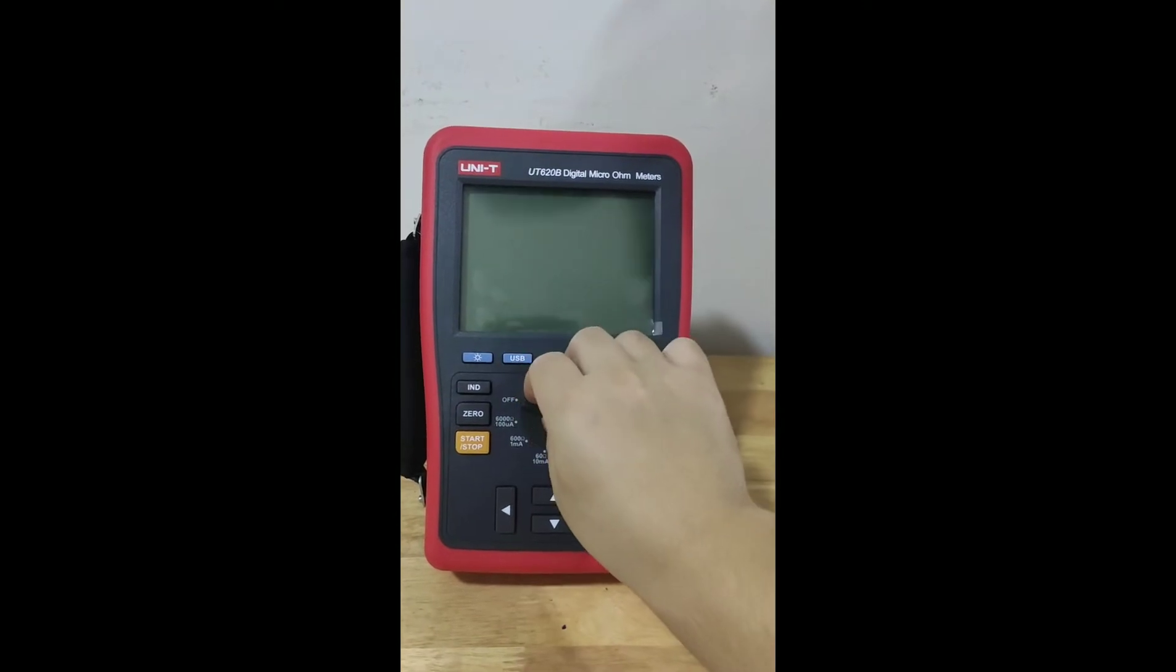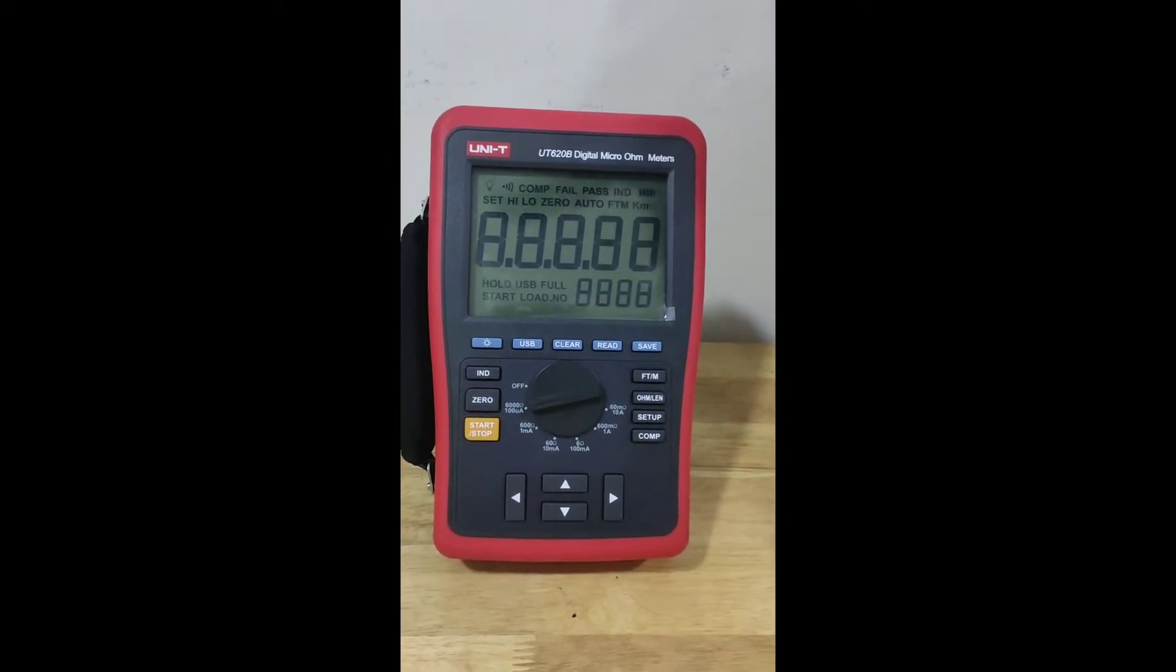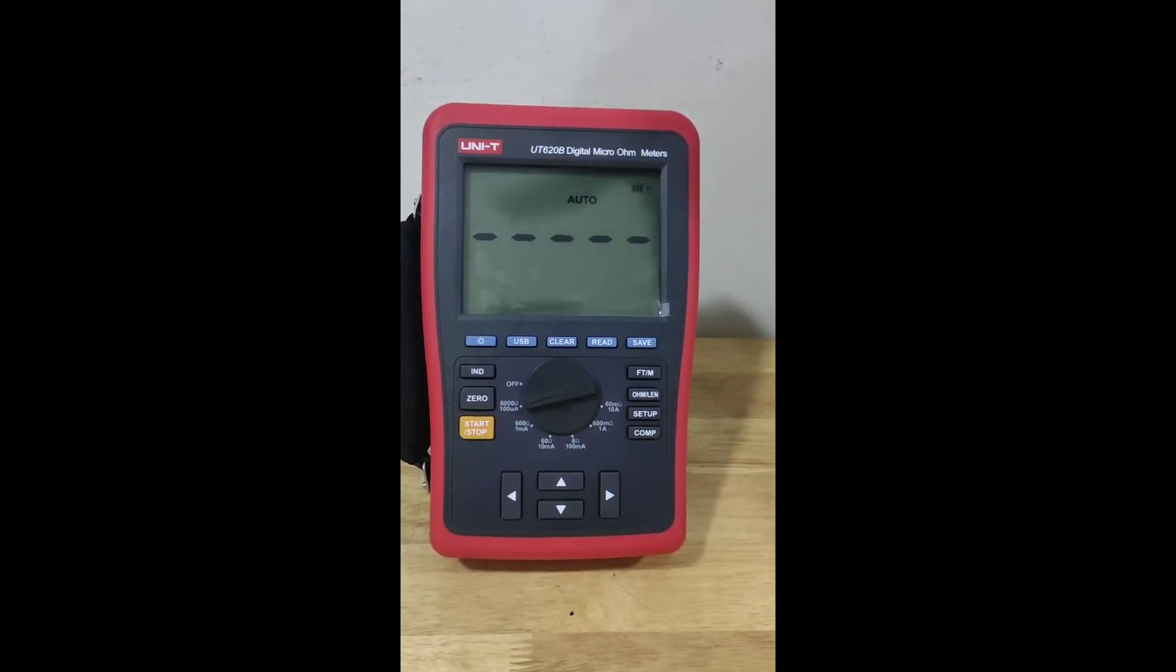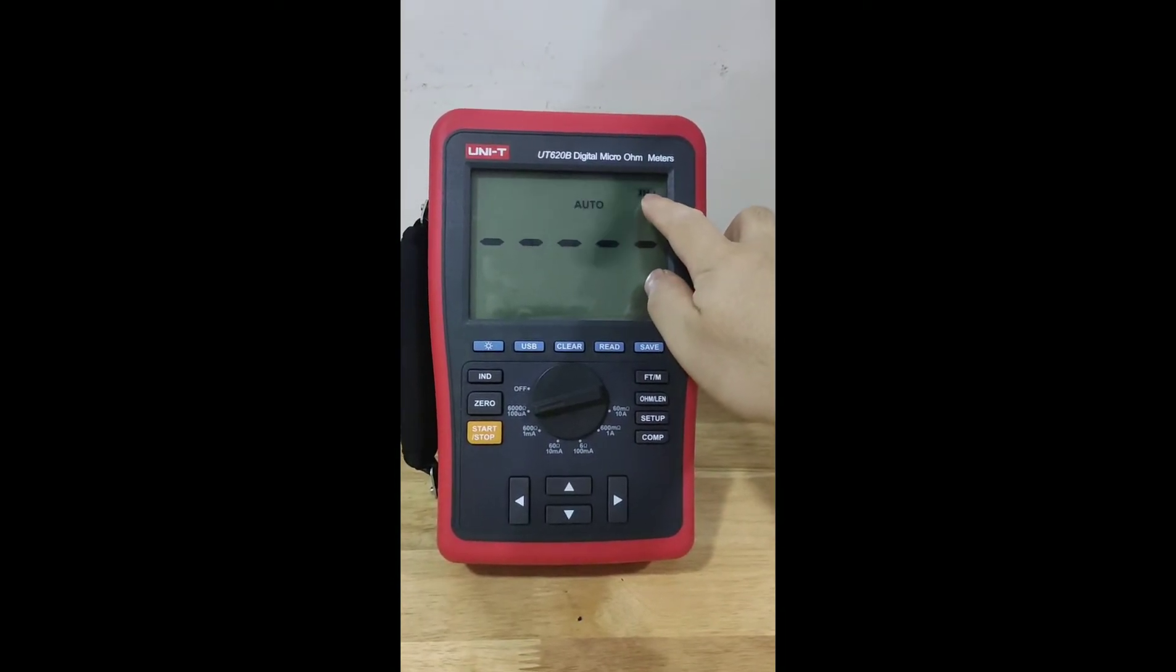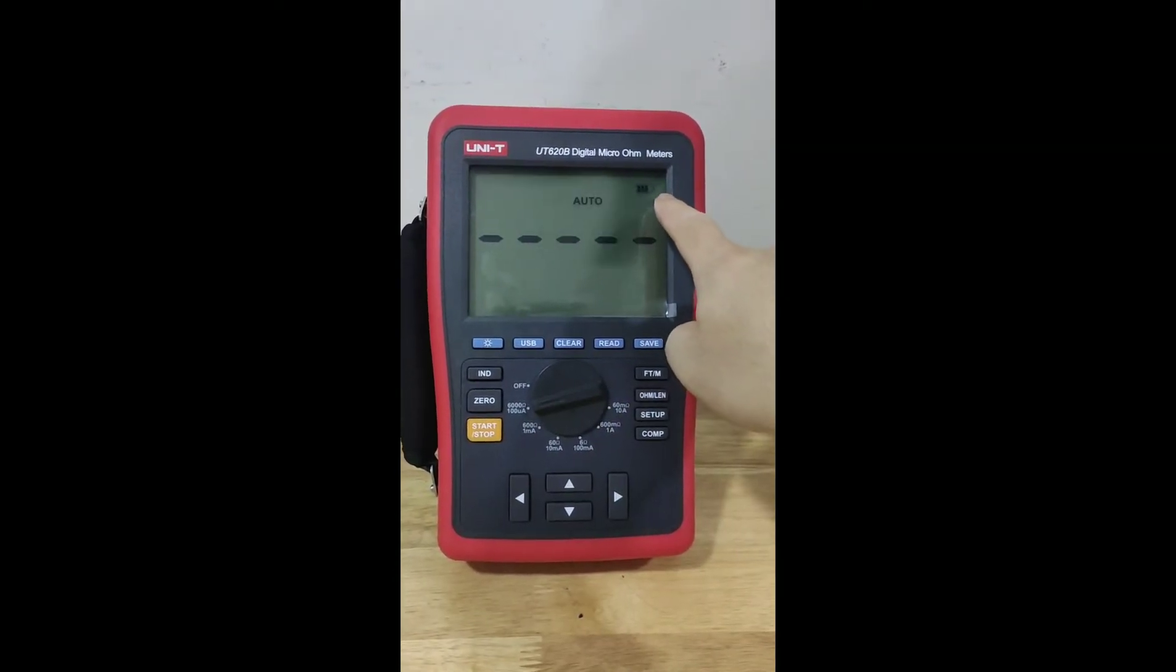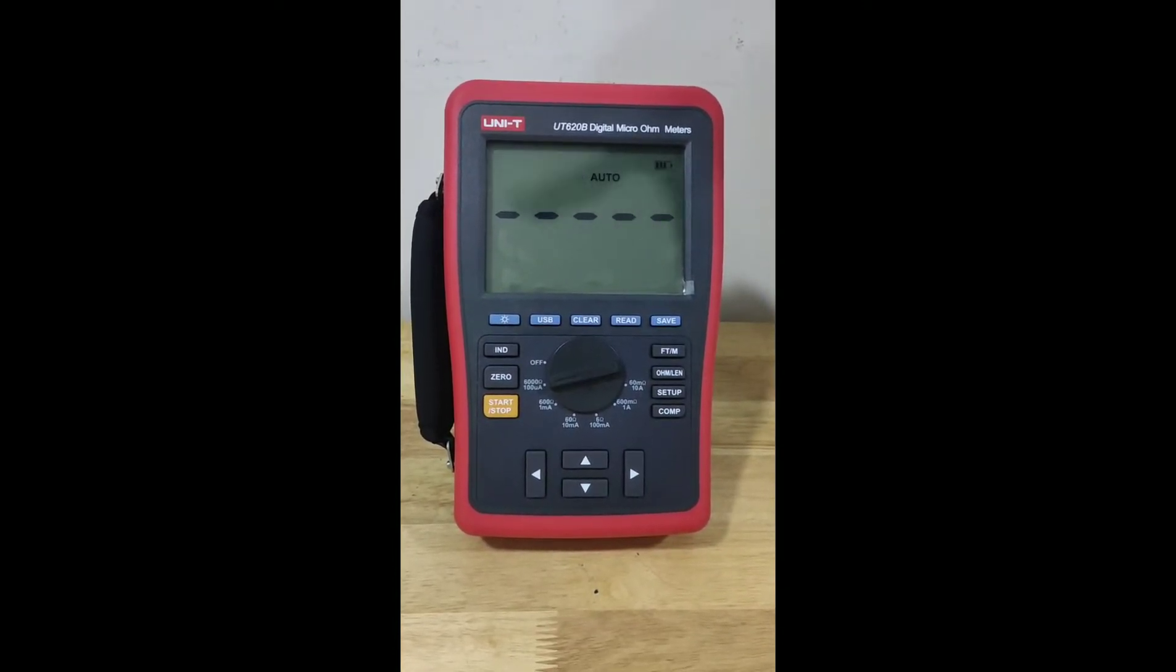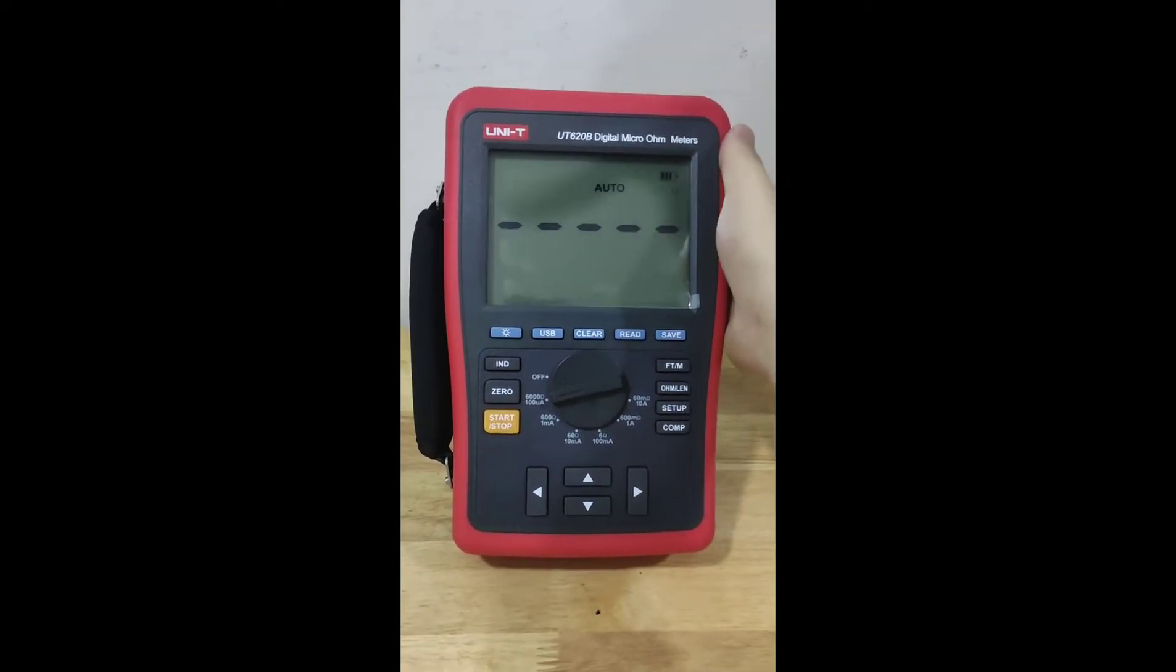First we turn on this machine. Okay, the machine is on and it is auto and here is the battery, the power indicator and auto and here is the unit, ohm.